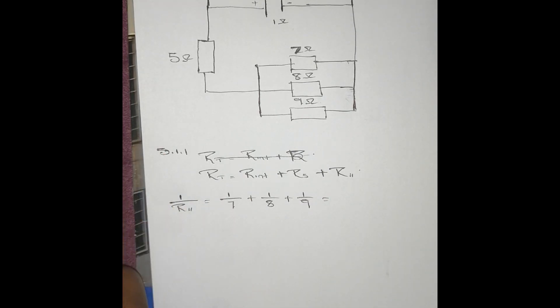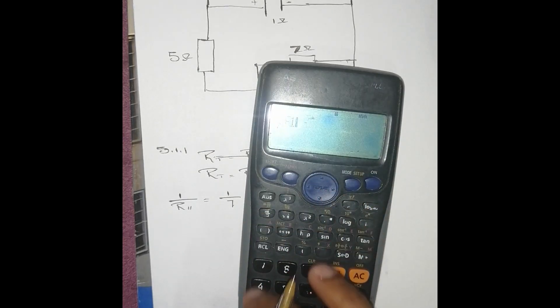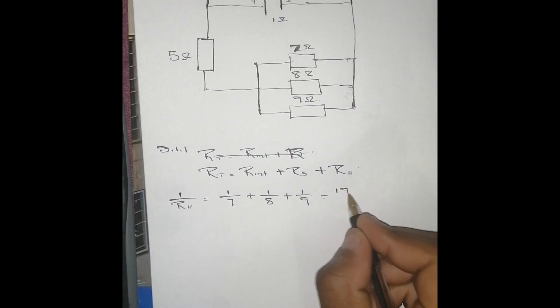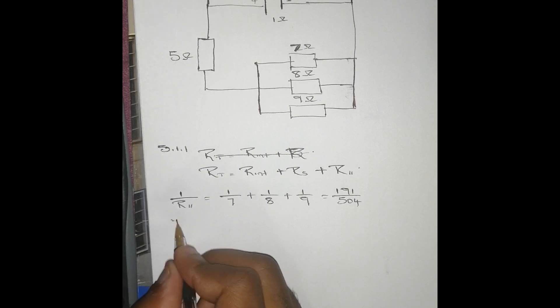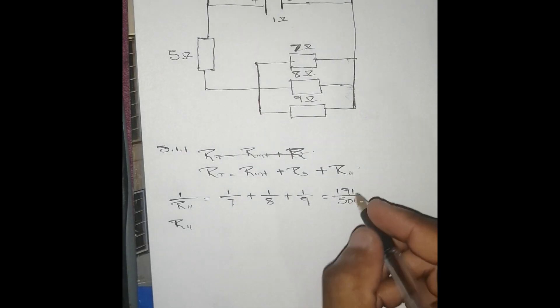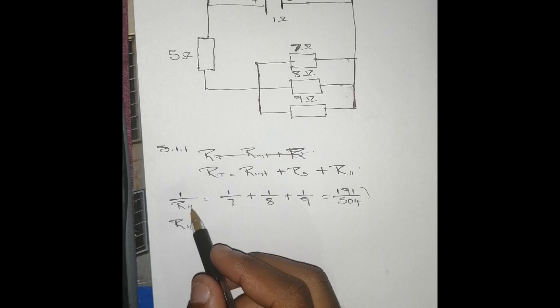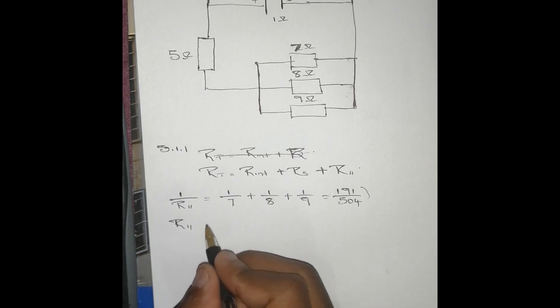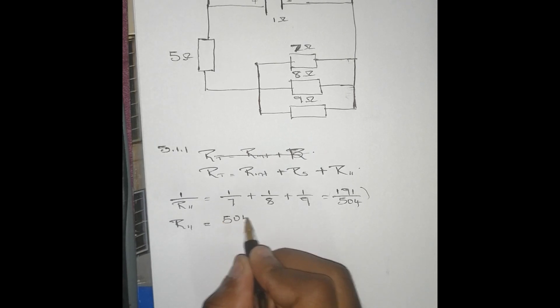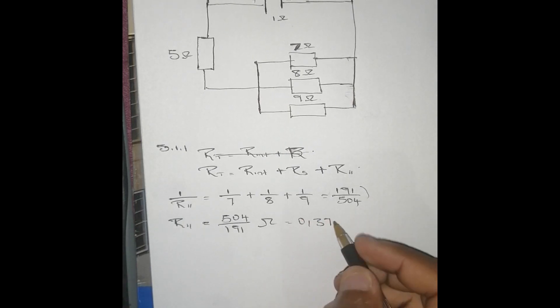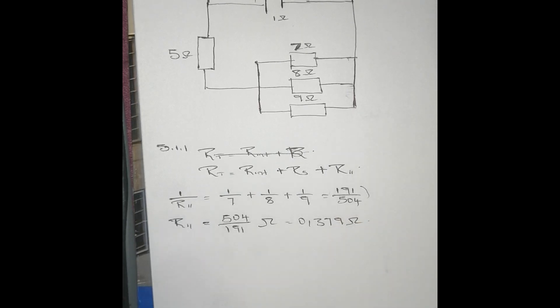Punching this into the calculator: 1/7 + 1/8 + 1/9 equals 191/504. We take the reciprocal to get R_parallel, which gives us 504/191 ohms. In decimal form, that is 2.639 ohms.